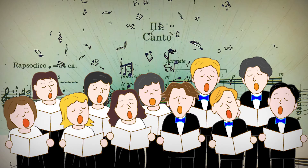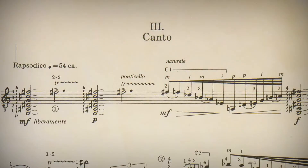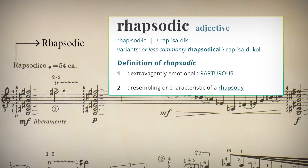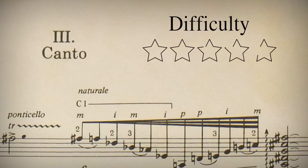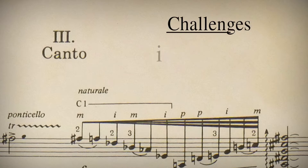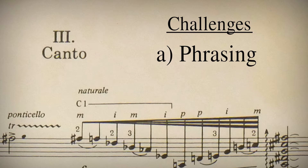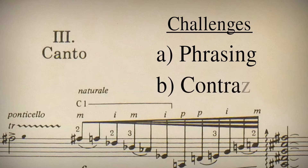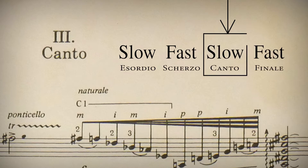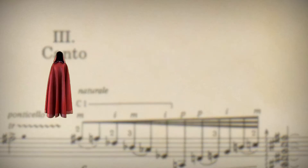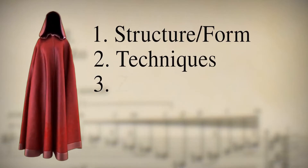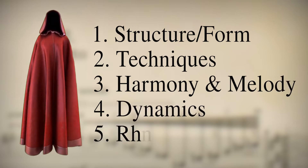Canto, which means chant, is the most poetic and introspective movement of the whole sonata. It focuses on phrases and gestures rather than a melodic theme. Although it has some tricky sections, it is not as technically demanding as other movements, especially the second or fourth. The challenge will be to correctly phrase and bring out all the beautiful and melancholic colors found within Canto.